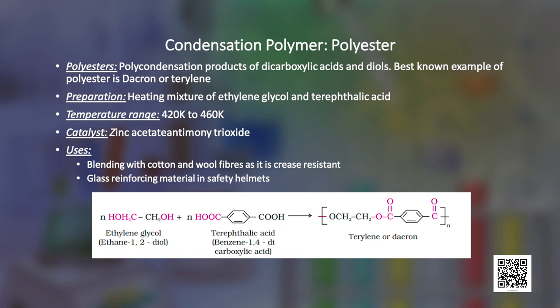Similarly, polymers possessing ester linkages are termed as polyesters. Terylene, also known as Dacron, is manufactured by heating a mixture of ethylene glycol and terephthalic acid between 420 to 460 Kelvin. The reaction is carried out in the presence of zinc acetate and antimony trioxide as a catalyst. The fiber of this polymer is crease resistant and is used in blending with cotton and wool fibers. It is also used as glass reinforcing material in safety helmets.